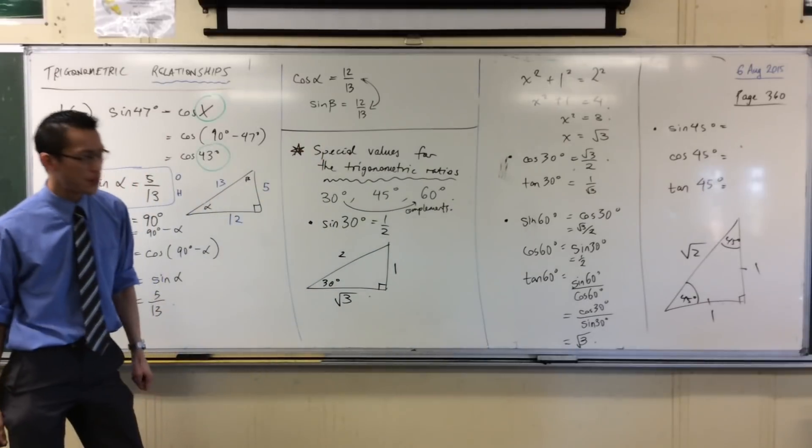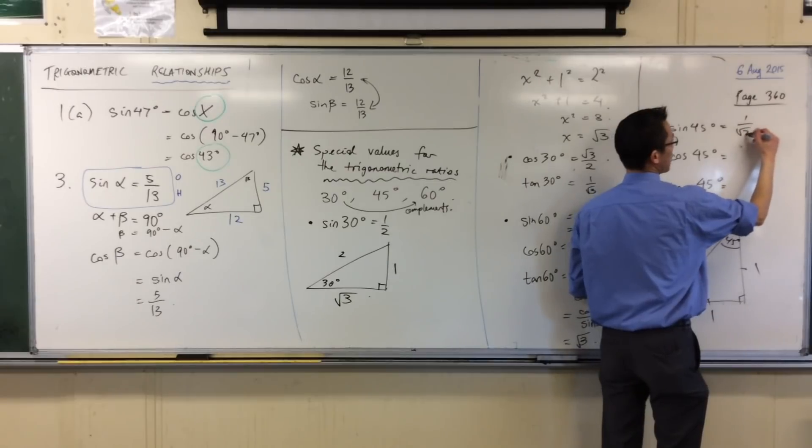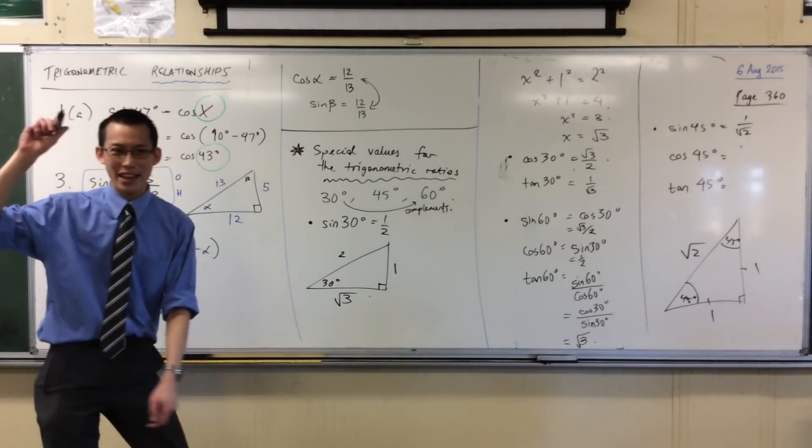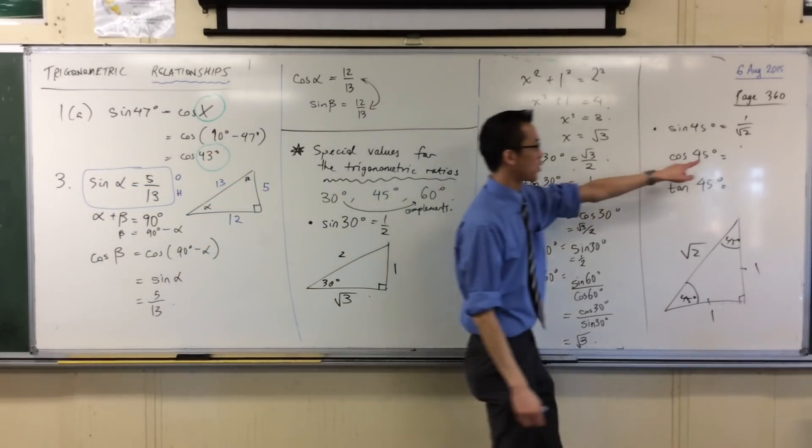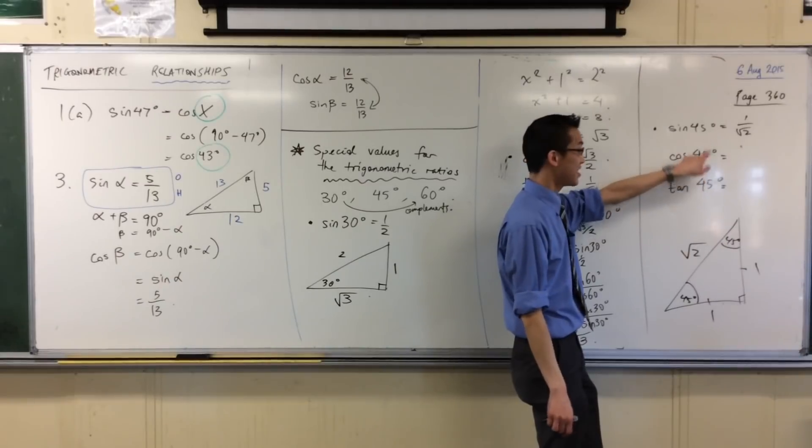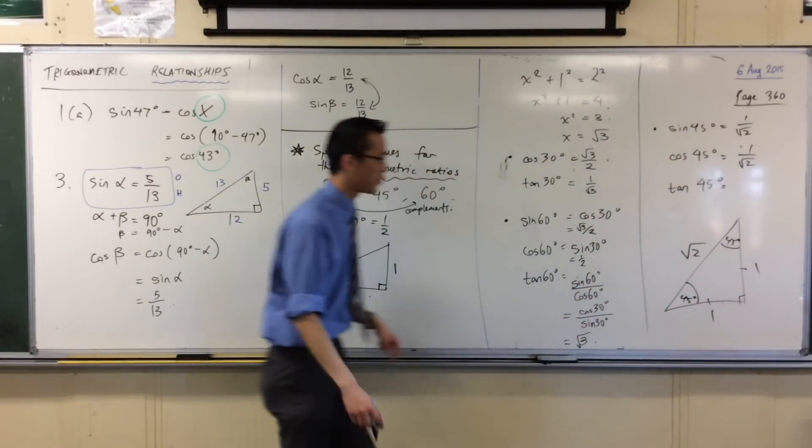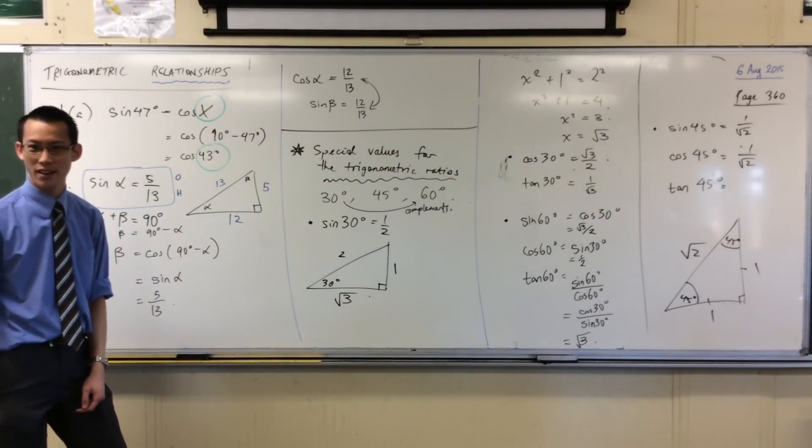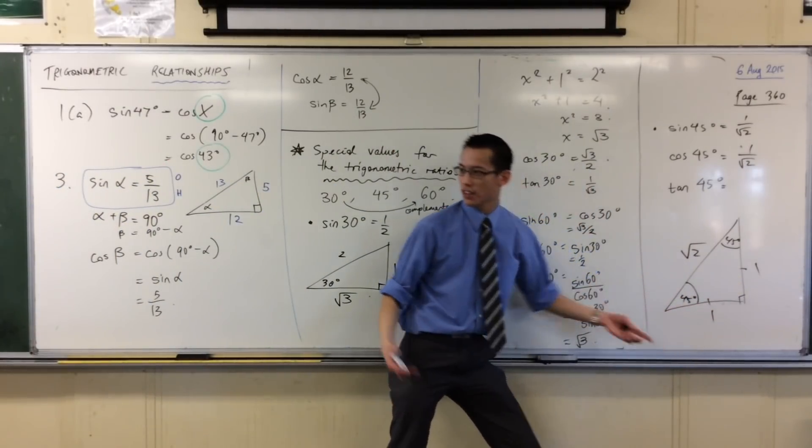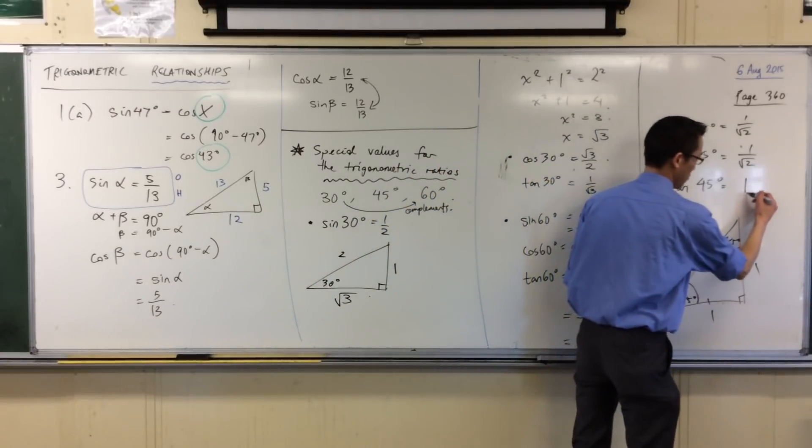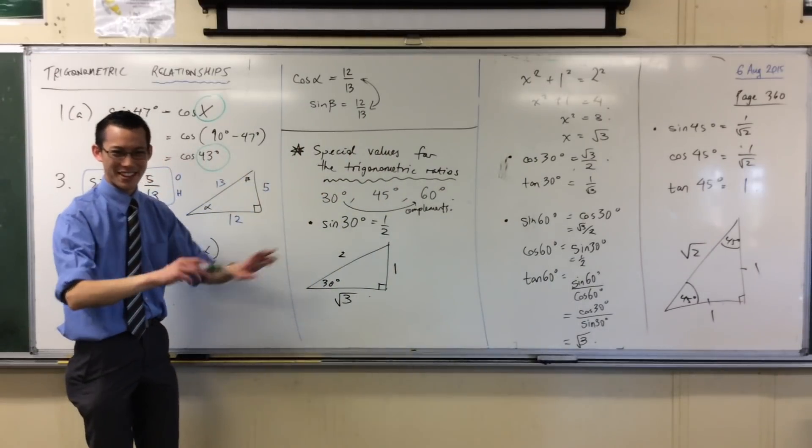Sine 45. Opposite on hypotenuse. One on root two. I didn't even need to look at the triangle for the next one, because remember we said 45 is its own complement. So cos 45 is the same as sine 45. Do you see that? Because they're complements. So it's still one on root two. Tan 45, he's the best one of all. He's the simplest. Opposite on adjacent. Actually, he's just one.